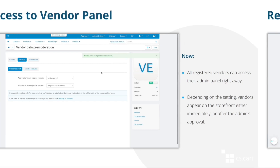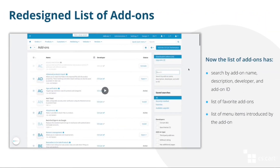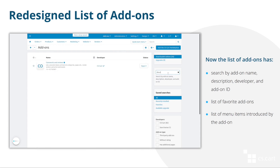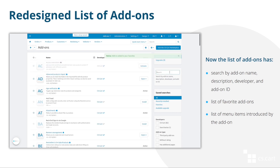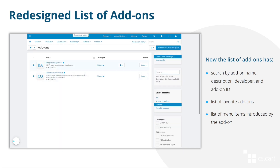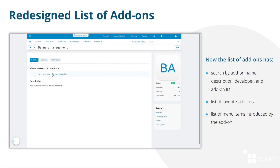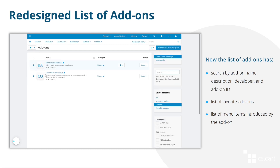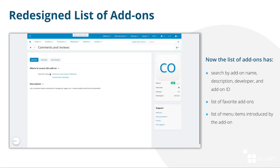Another huge change is the redesigned list of add-ons. In version 4.13.1, we updated the page with the list of add-ons. Now, thanks to improved search filters and a list of favorite add-ons, it is easier to find the add-on you need. The list of menu items introduced by each add-on also makes it easier to understand how the add-on works.